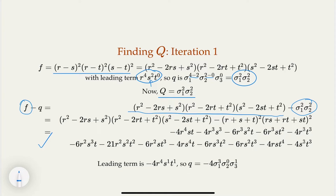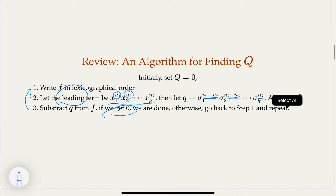Now the leading term has degree 4, 1, 1. The corresponding degree differences are 4 minus 1 = 3, 1 minus 1 = 0, and 1 — giving sigma 1 to the third power times sigma 3 as the leading term. We repeat the process: find the term, subtract it, and repeat.